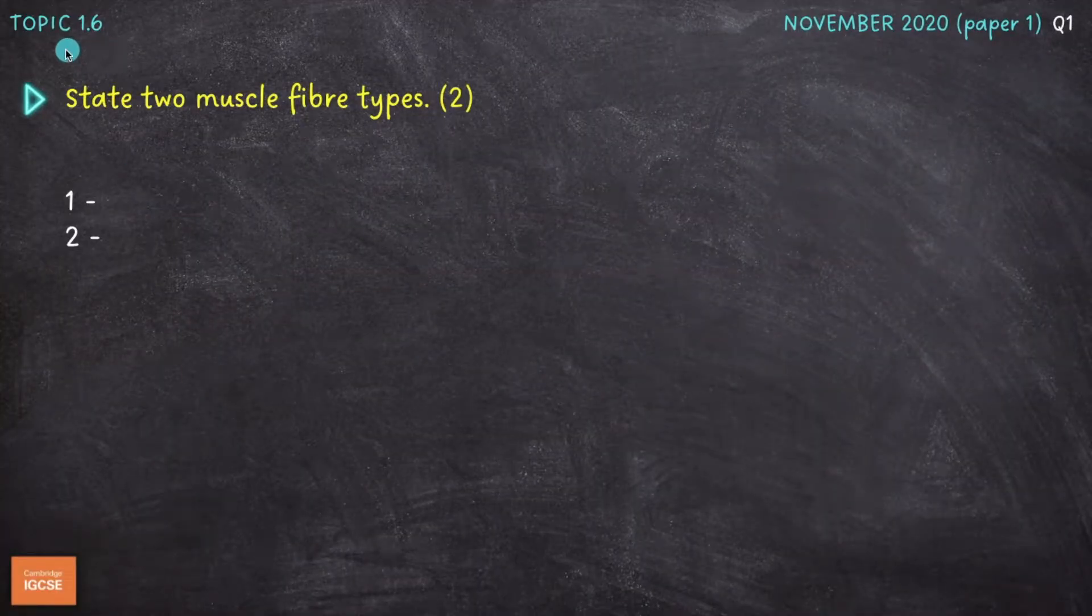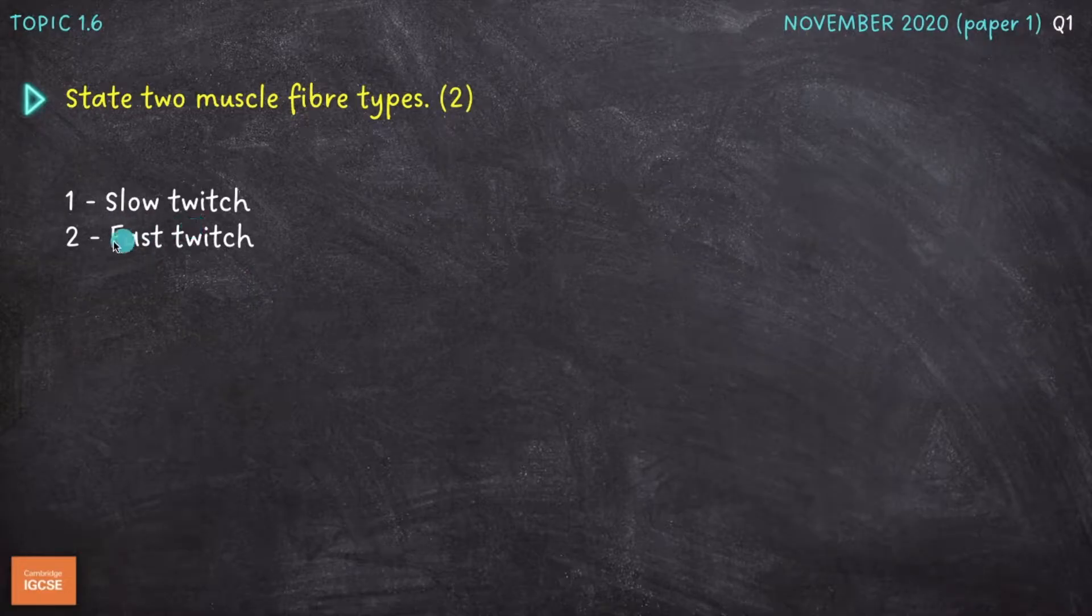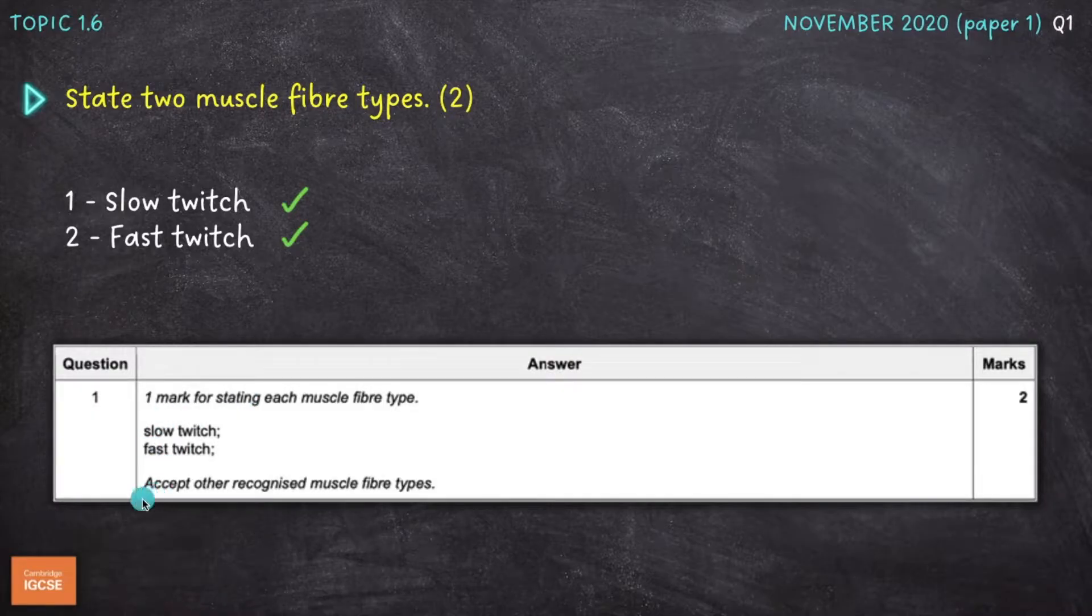Question number one is on topic 1.6 and as always you can head down to the description of this video and find links to short summary videos containing literally everything you need to know on Chapter 1. So if you struggle to answer a question, go and watch the relevant video, then come back and attempt it. State two muscle fibre types. So a really easy question to start us off for two marks. The two muscle fibre types are slow twitch or type 1 and fast twitch or type 2, which is confirmed here by the mark scheme.